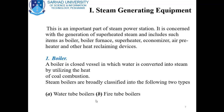Number one is steam generating equipment — the most important part of a steam power station. It is concerned with the generation of superheated steam and includes items such as boiler, boiler furnace, superheater, economizer, air preheater, and other heat reclaiming devices. The steam generating equipment generates steam using the boiler, where water is heated and converted to steam.